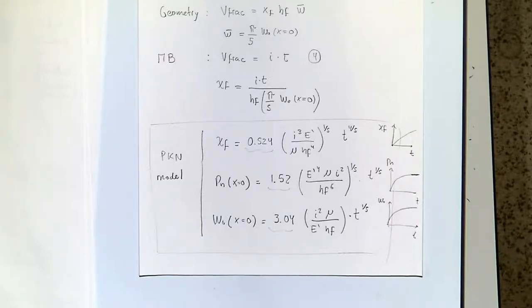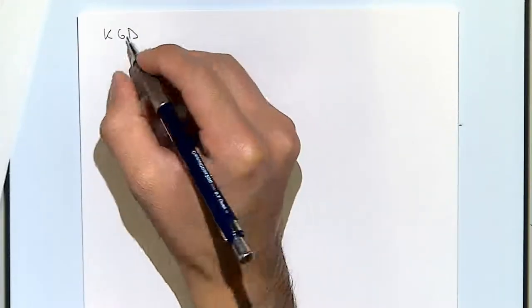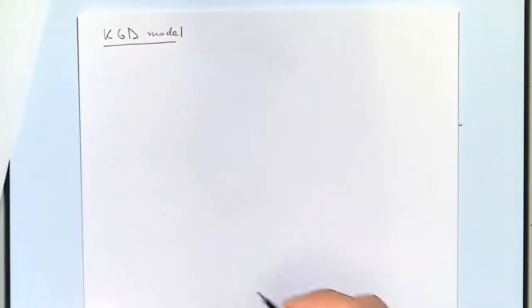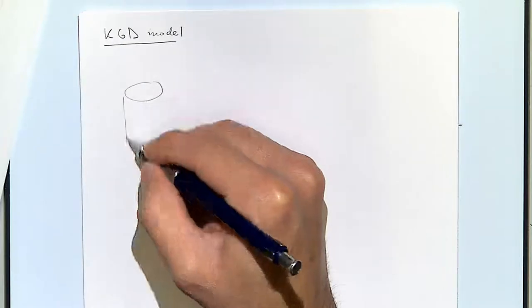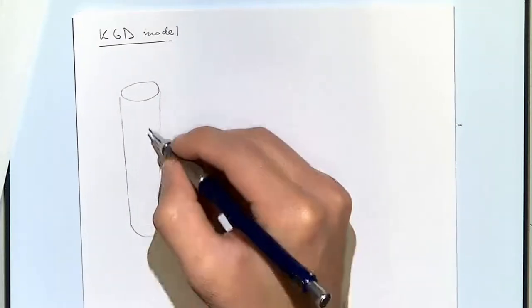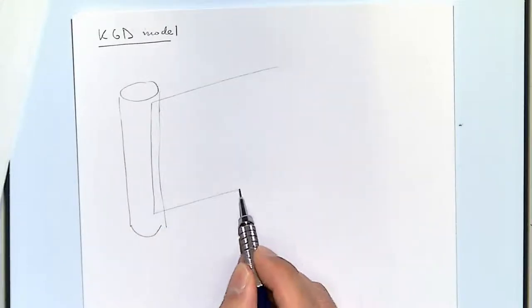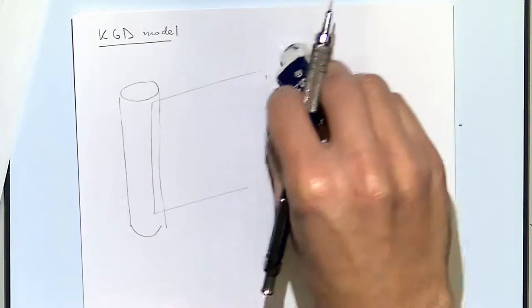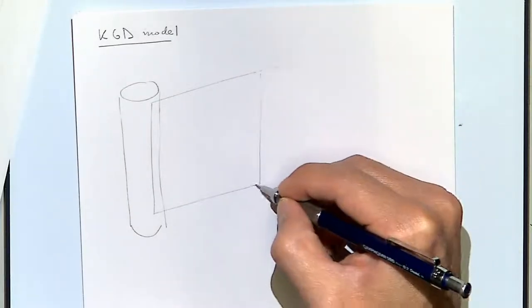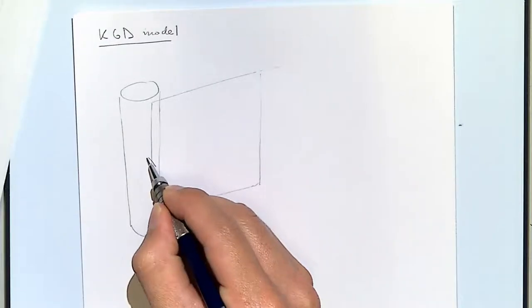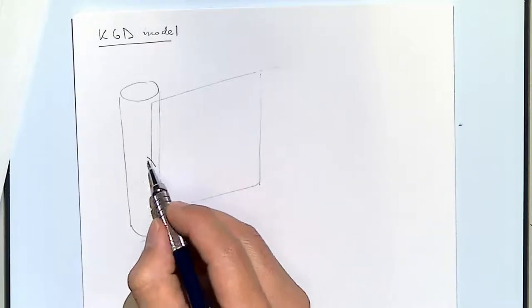Similar to the PKN model, there are two other analytical models useful for understanding hydraulic fracture propagation before going into something more complex. The second one is called the KGD model. It's similar to PKN in that there is a constant fracture height, but in this case, the fracture now has a plane strain assumption — not on a vertical plane as before, but on a horizontal plane.